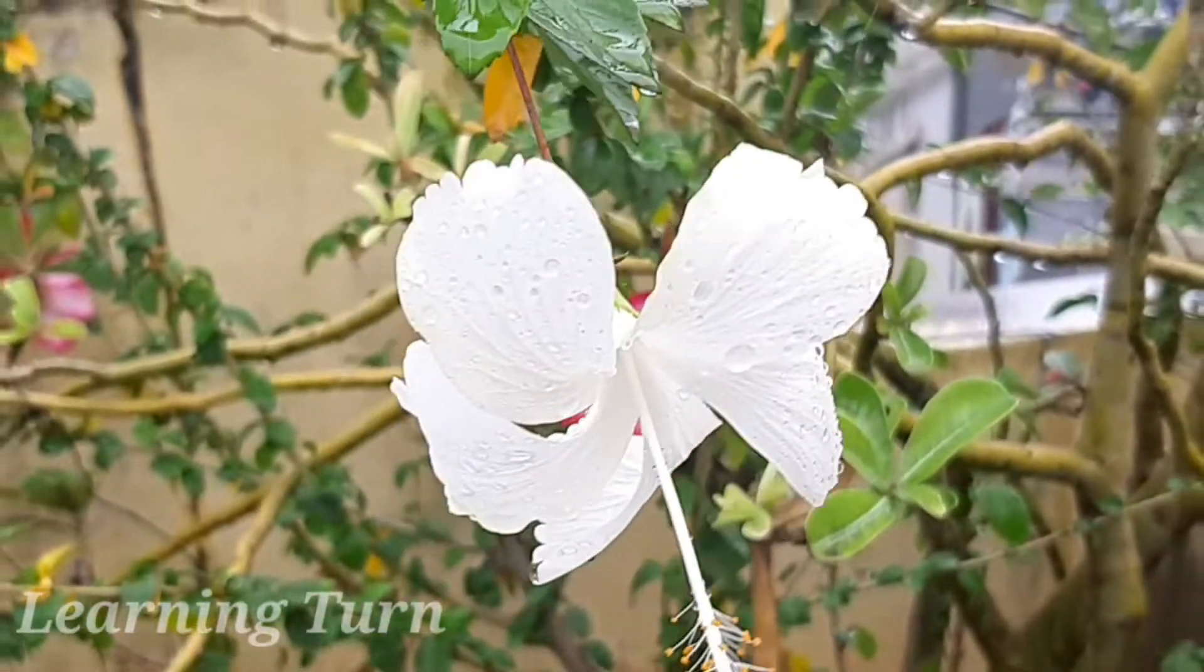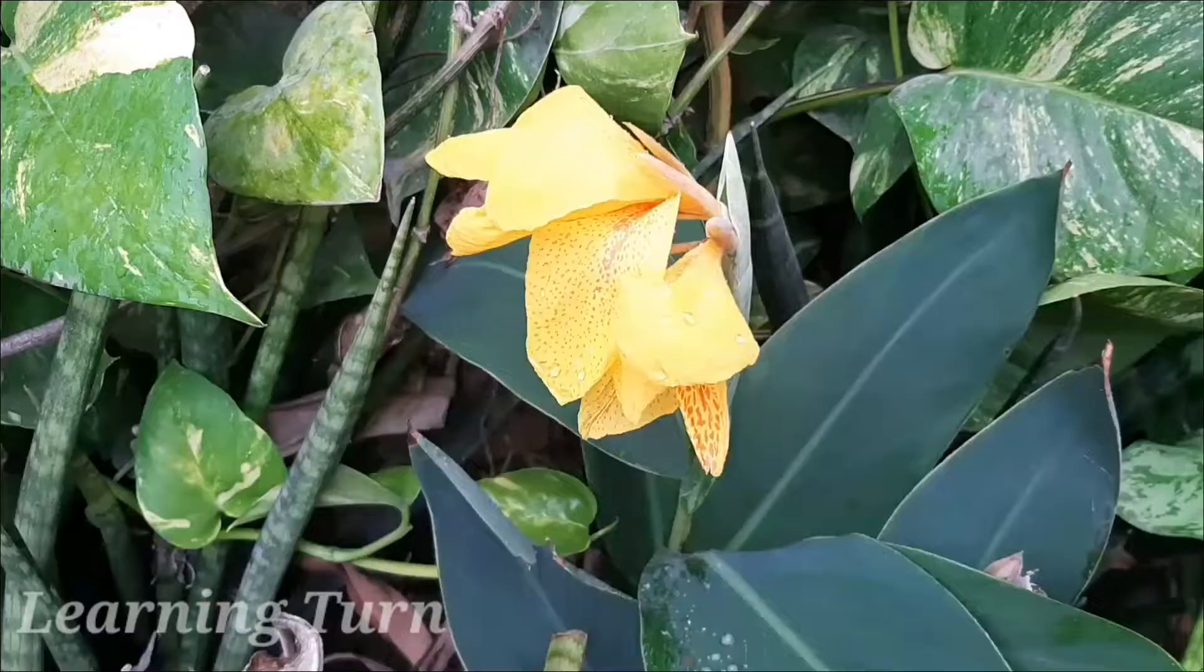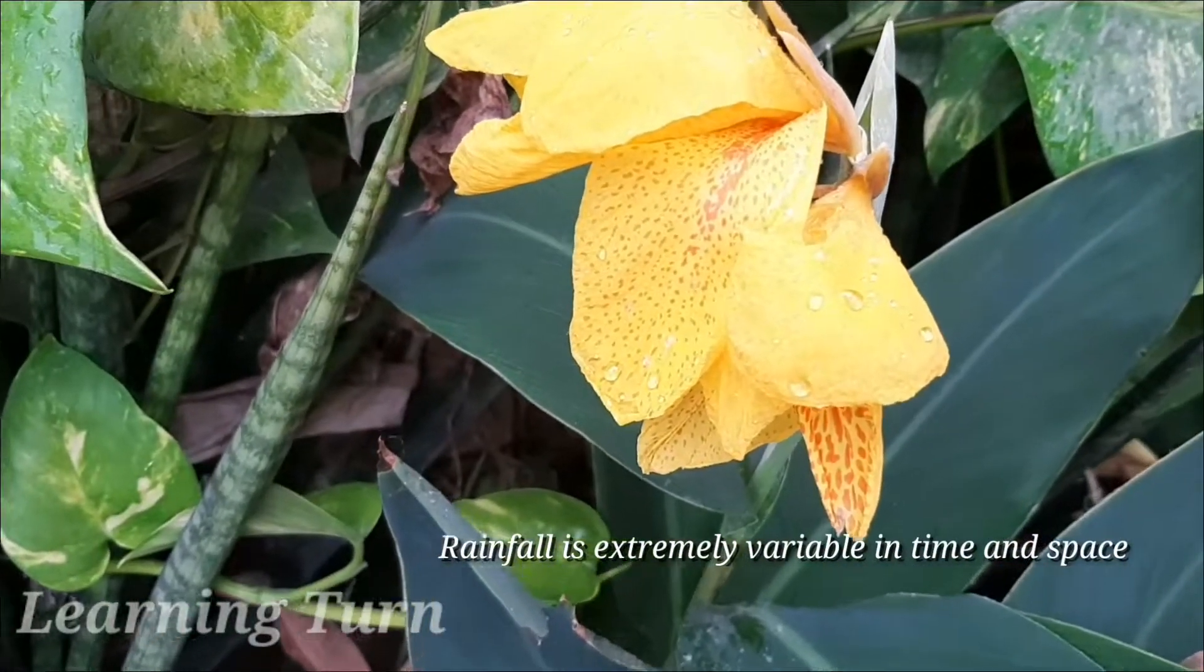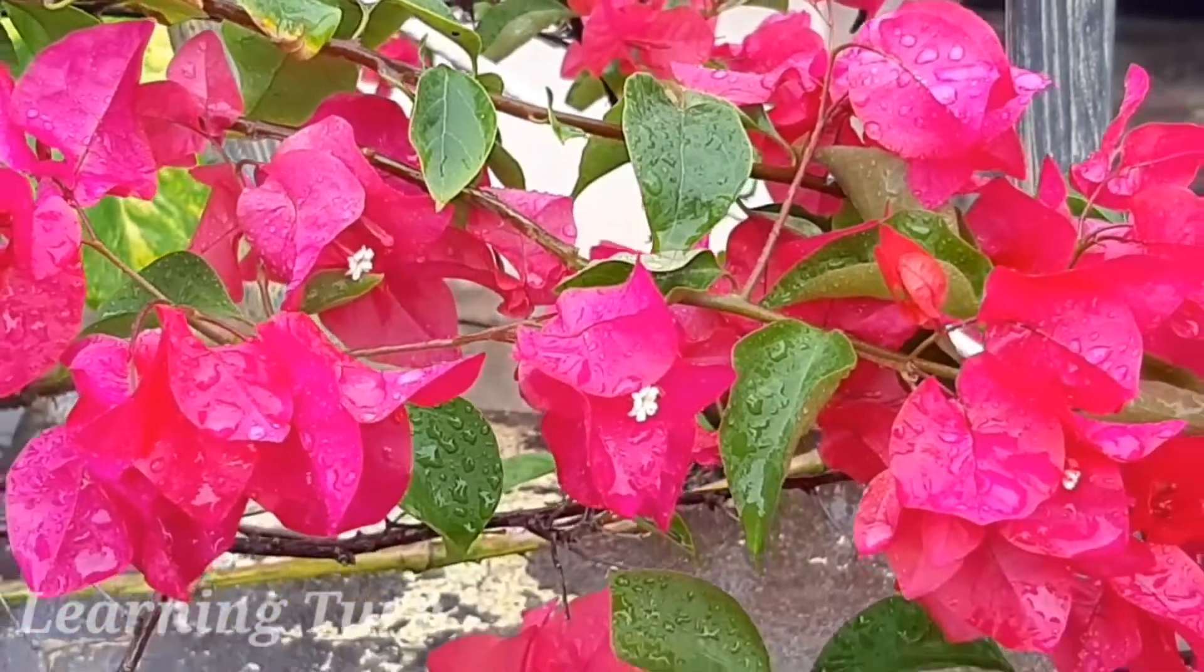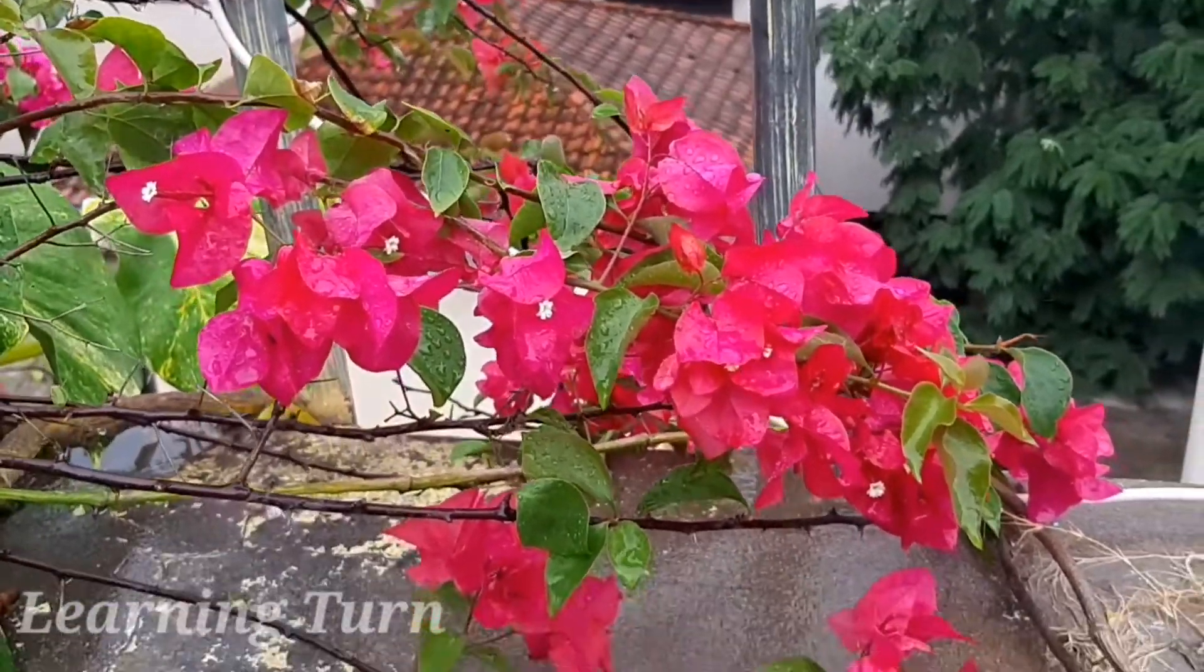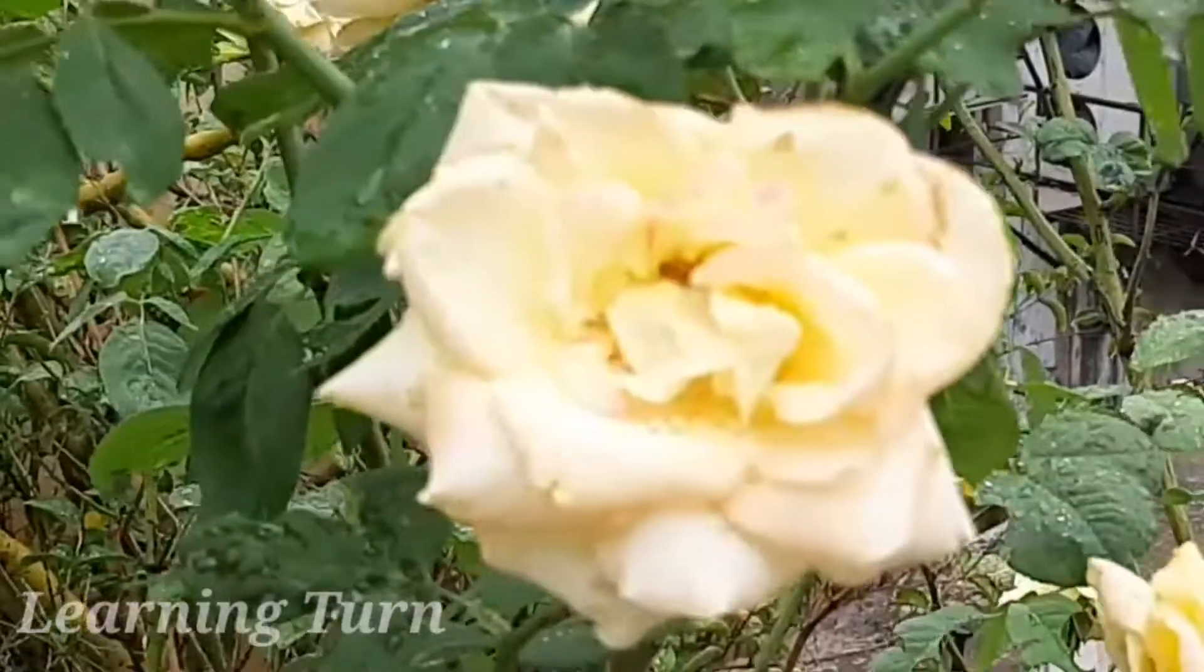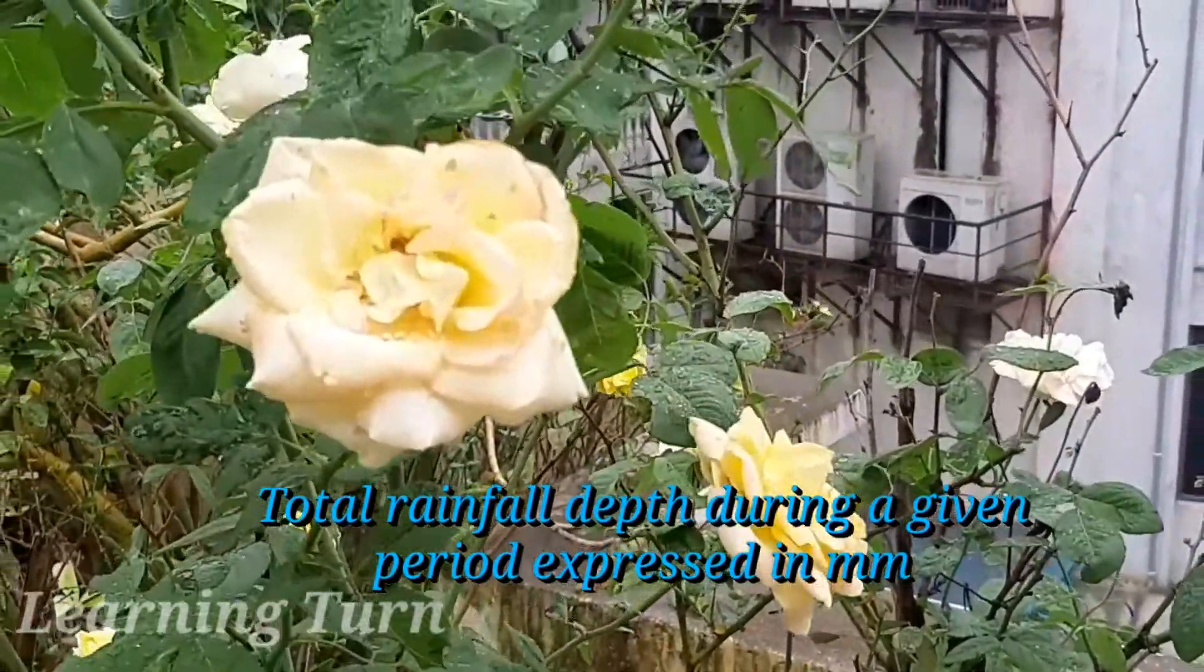A much needed step to better understand this natural phenomenon is to properly measure it. It turns out to be pretty tricky because rainfall is extremely variable in time and space. The most common rainfall measurement is the total rainfall depth during a given period, expressed in millimeters.